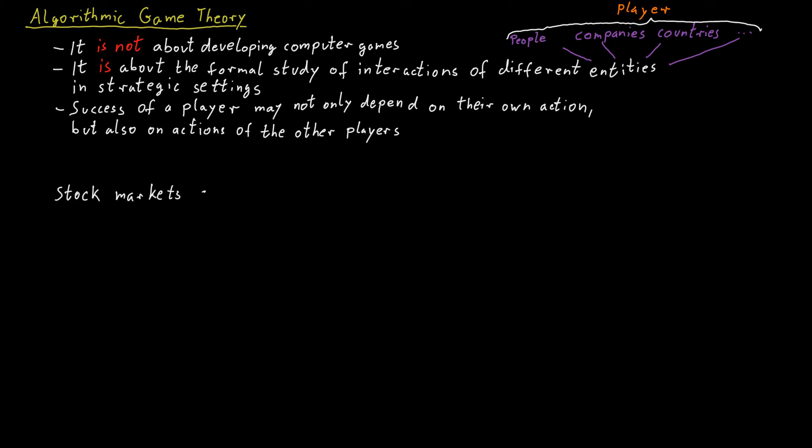For example, if you have a stock market, you could view this as sort of a game. If I want to buy some stock at a certain time for a certain price, I can make that decision, but somebody else also has to be willing to sell me that stock for that price at that time.